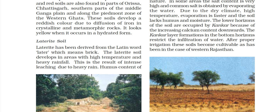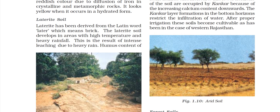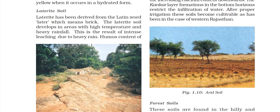The kanker layer forms at the bottom of the horizon, which restricts the infiltration of water. After proper irrigation, the soil becomes cultivable. Arid soil can be seen in the case of Western Rajasthan.